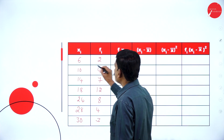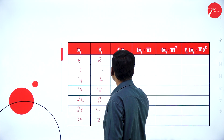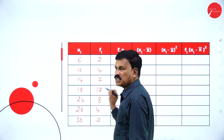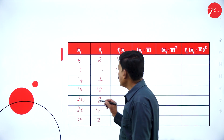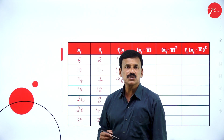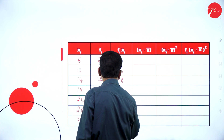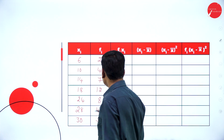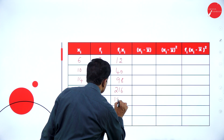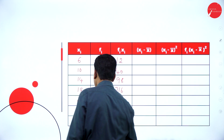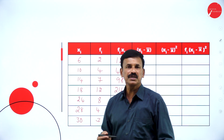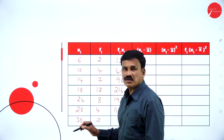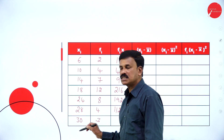Computing fi into xi: 14 into 7 is 98, 18 into 12 is 216, 24 into 8 is 192, 28 into 4 is 112, and 30 into 3 is 90.